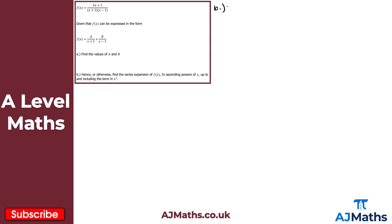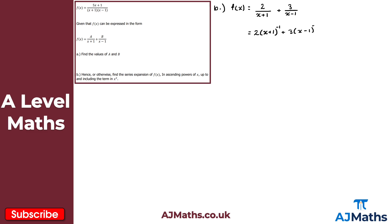For part b, we need to find the series expansion of f of x in ascending powers of x up to and including the term in x squared using the binomial expansion. We rewrite f of x in its partial fraction form: 2 over (x+1) plus 3 over (x−1). Writing in index notation, this is 2(x+1)^(−1) plus 3(x−1)^(−1). We'll use the binomial expansion twice — once for each fraction.